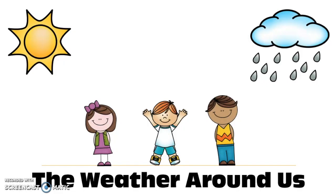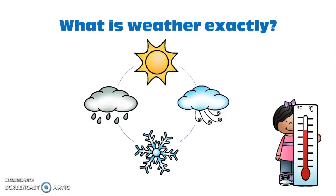Hi students, today we're going to learn about the weather around us. You already have some knowledge about this, but we're going to go into a little more detail. What is weather exactly? Weather is the combination of sunlight, wind, snow, rain, and temperature in a particular region at a particular time. As you know, our weather can change every day.